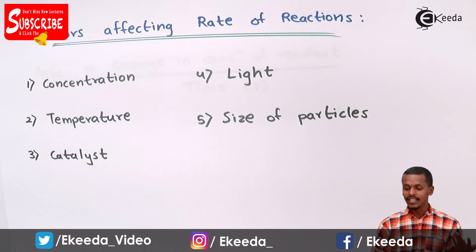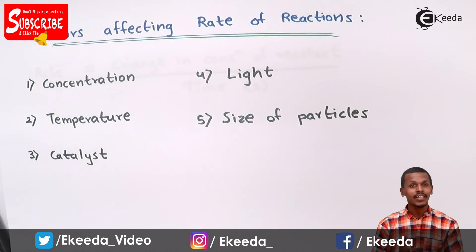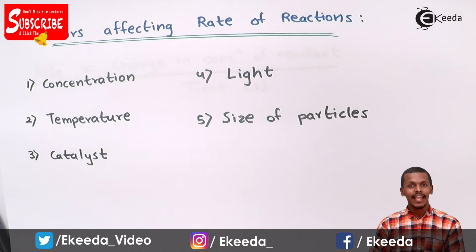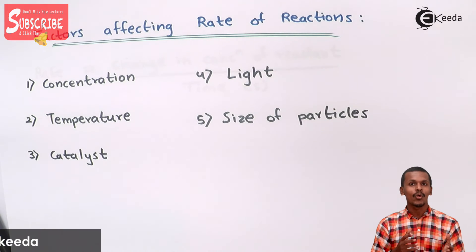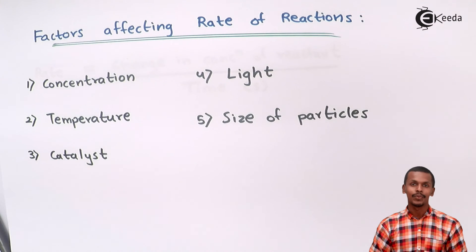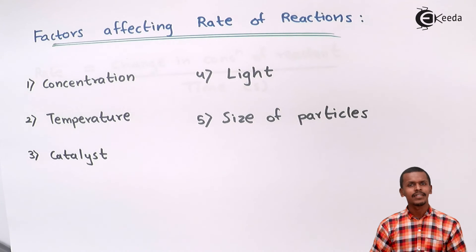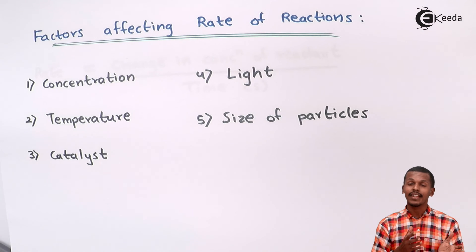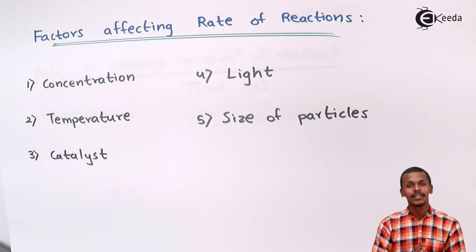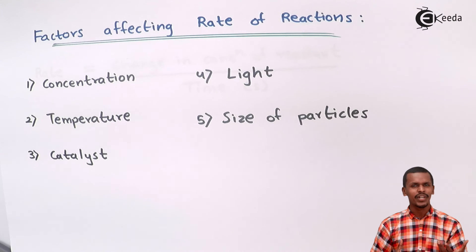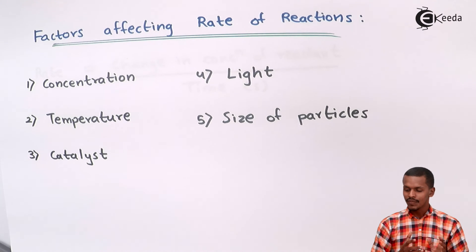Light plays a very important role in increasing the rate of reaction — just like in photosynthesis, where light is required for the process; without light the process slows down. Also, when chlorine gas reacts in the presence of UV light, the reaction rate increases due to the energy provided, and substitution reactions can take place very easily.